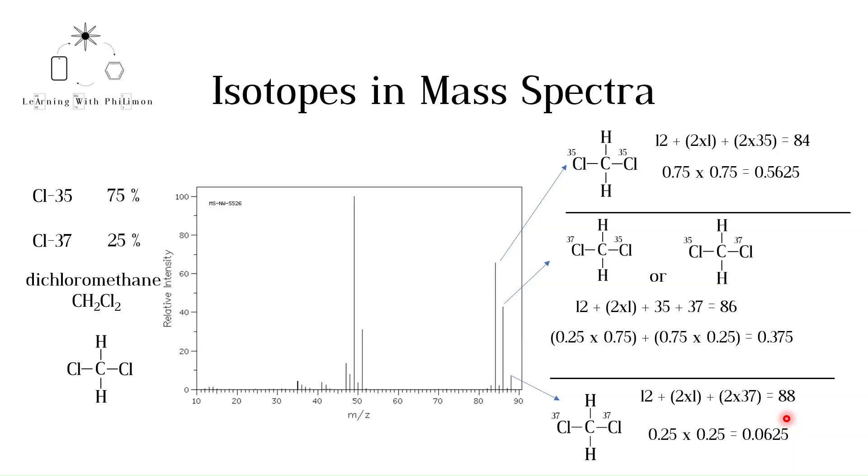Dividing all three numbers by the smallest number, 0.0625, we get a ratio of 9 to 6 to 1. We see this ratio in the three highest peaks of dichloromethane. This pattern is seen for any compound containing two chlorine atoms.